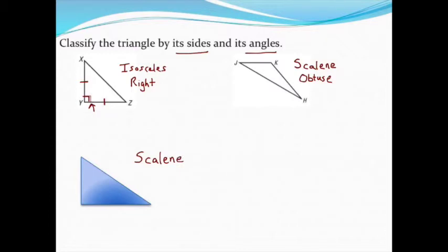Also, to name it by its angles, I have to be careful because this angle right here looks like it might be 90 degrees, but I don't have a tick mark there. I'm not allowed to assume, so I cannot call this a right triangle. Maybe it's 90 degrees, and so maybe it would be a right triangle, but...